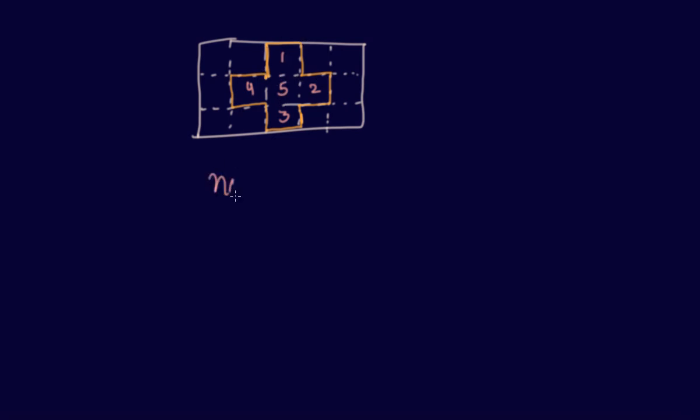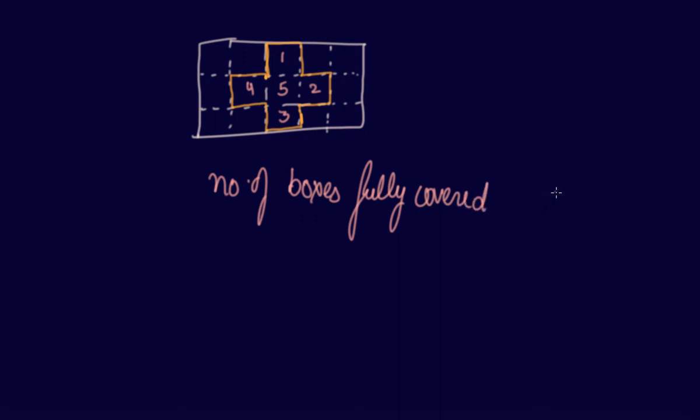Now look at this figure on the grid. You have to find out the area. Count how many boxes are fully covered: 1, 2, 3, 4, and 5. In this figure, 5 boxes are fully covered. So the area estimate will be 5 square units.